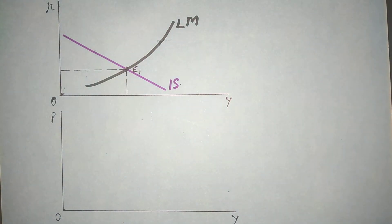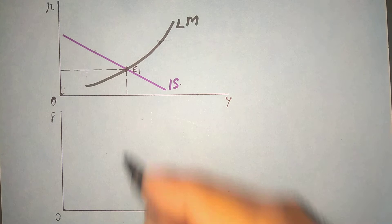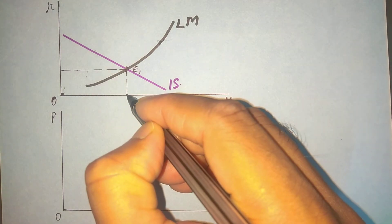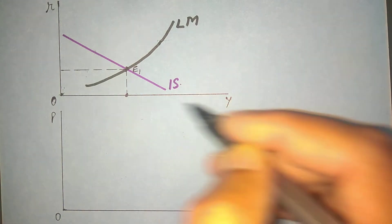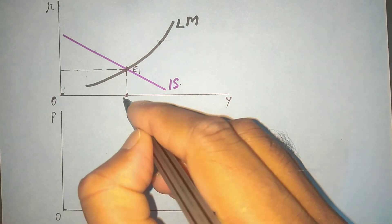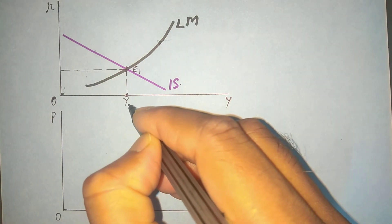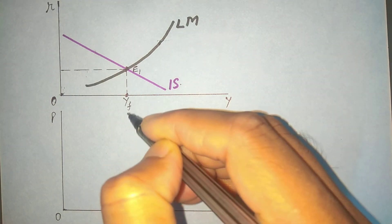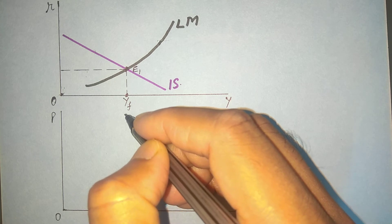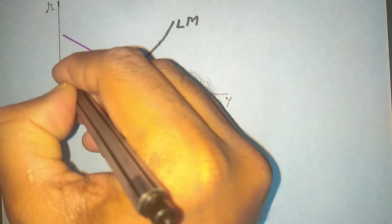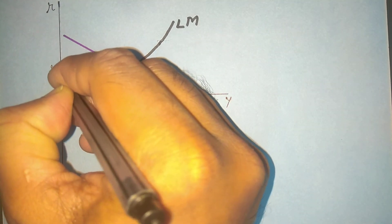The equilibrium is at point E1. This is the value of interest R1, and income is Y1.